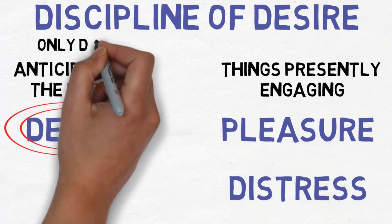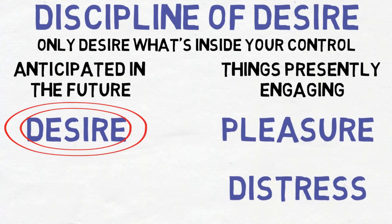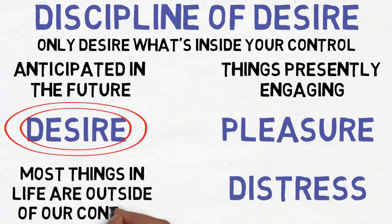Marcus Aurelius only desired what was inside his control or what happened to him. In his meditations, he continuously repeats to himself that most things in life are outside of his control. He realized that life is unpredictable. In 2000 years, nothing has changed about that.